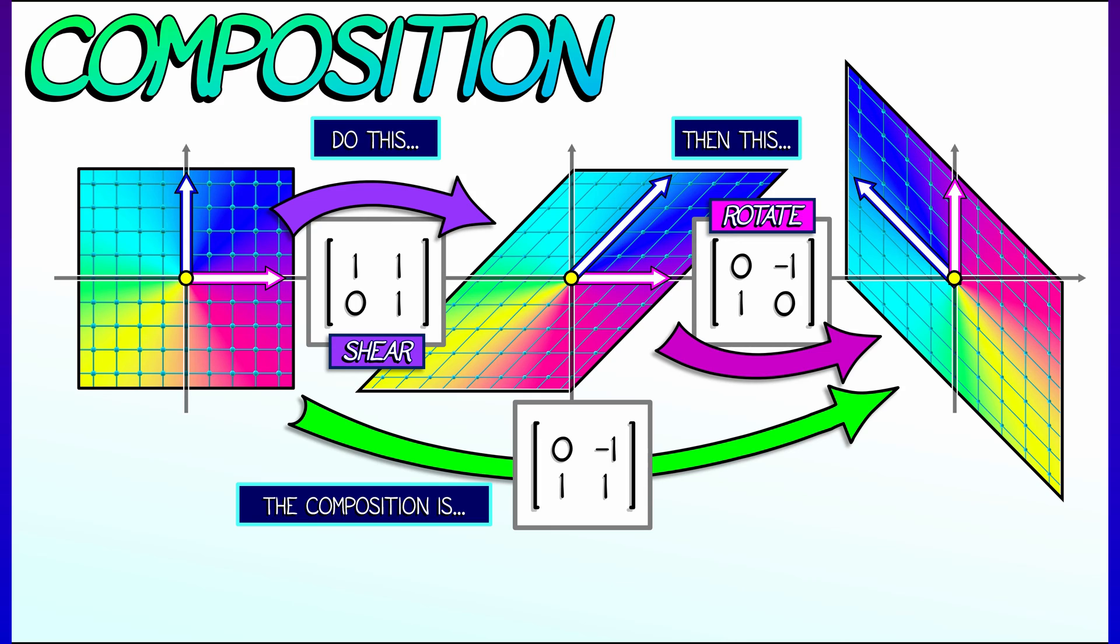The I vector, 1, 0, goes to 0, 1. And the J vector, 1, 1, goes to negative 1, 1. There. There's the matrix. There's the linear transformation. We could just read it off from the basis vectors.